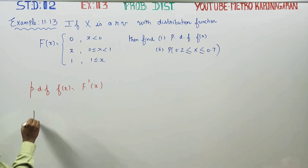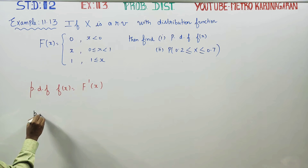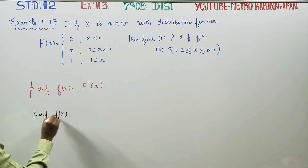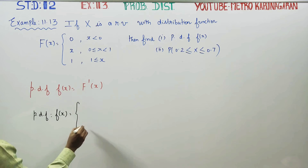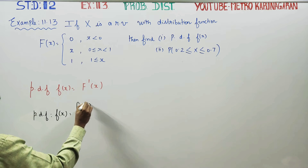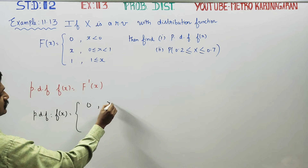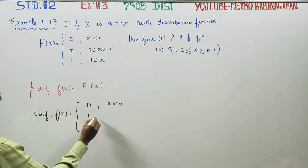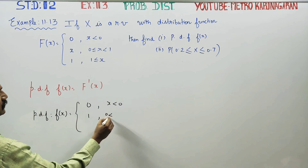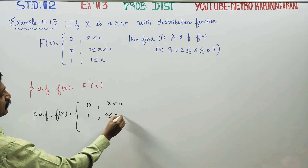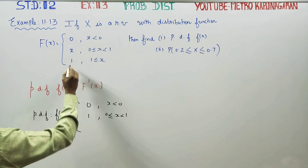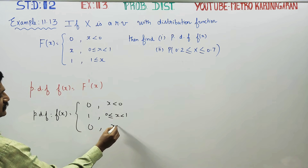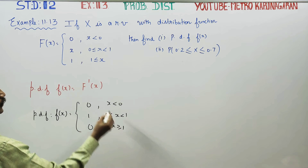So the probability density function f(x): differentiating 0 gives 0, with the condition x is less than 0. Differentiating x gives 1, for the interval between 0 and 1.